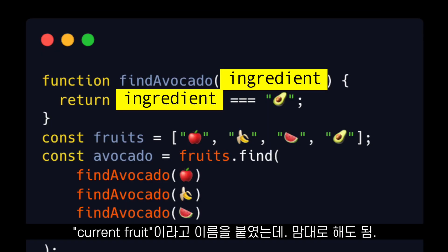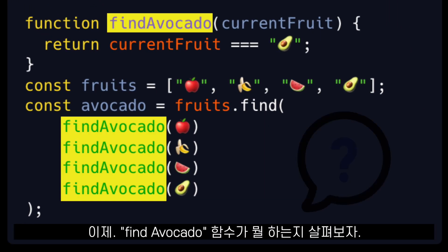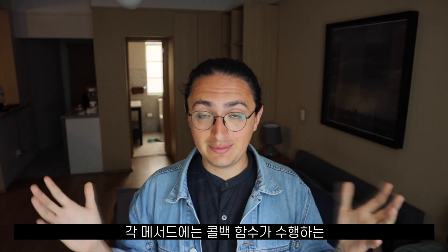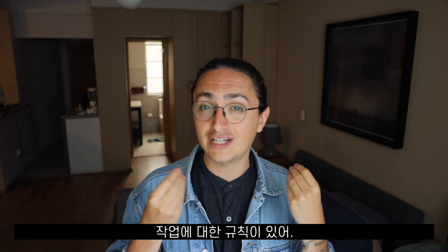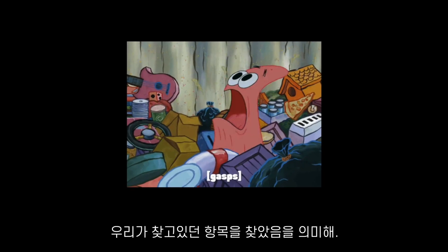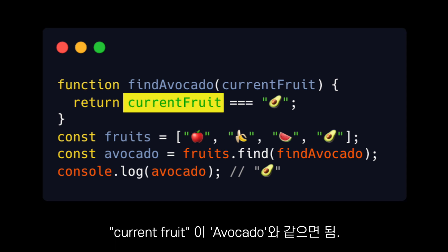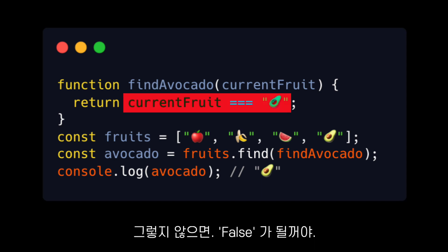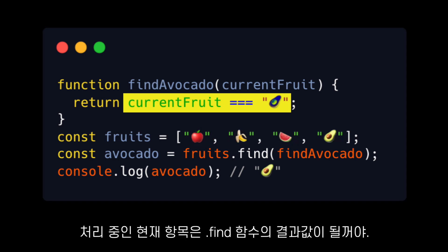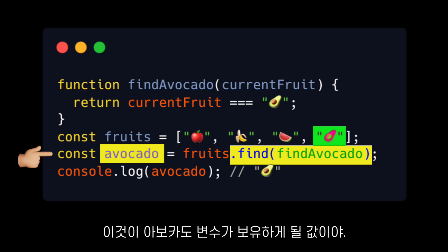The name of the parameter on the callback function does not matter. I named it current fruit, but you can name it whatever you want. What is important is the position. The rule for that find is that if the callback function returns true, that means that we have found the item that we are looking for. In our find avocado function, the condition will be true if the current fruit we are receiving from JavaScript is equal to avocado, else it will return false. After our find avocado function returns true, the current item being processed is going to be the resulting value of the that find function, and that is the value that our avocado constant is going to hold.